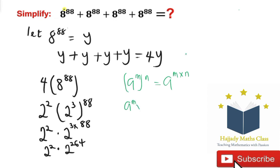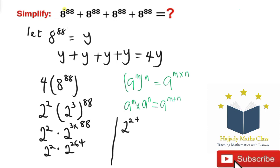Using the rule of indices that says a to the power of m, multiplied by a to the power of n, is the same as a to the power of m plus n, we finally get 2 to the power of 266. This is my final answer. Thank you very much for watching. Please kindly subscribe.